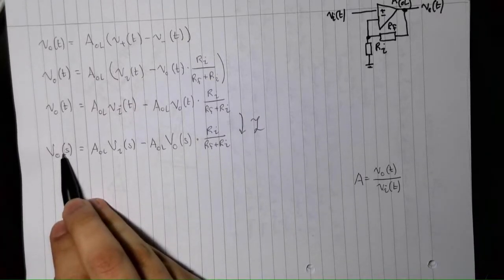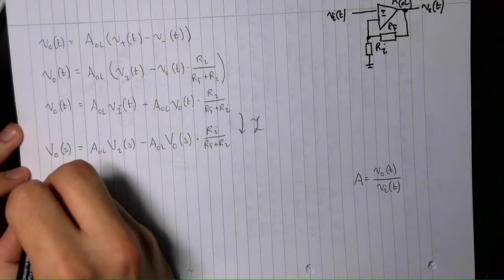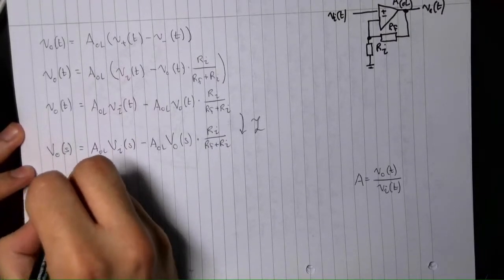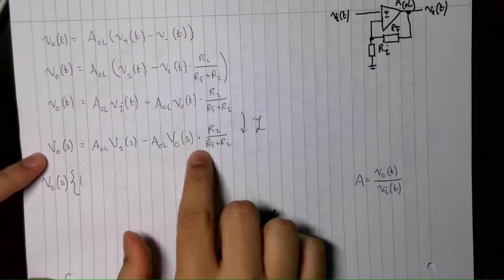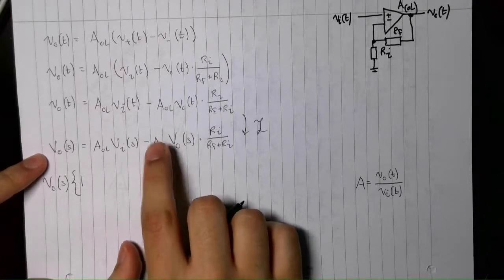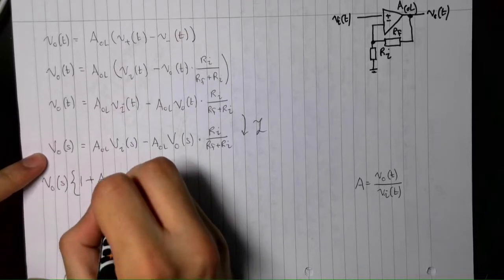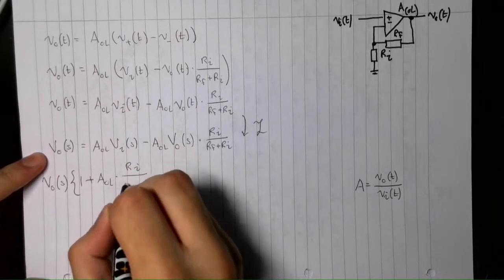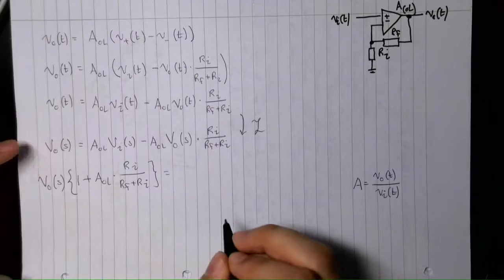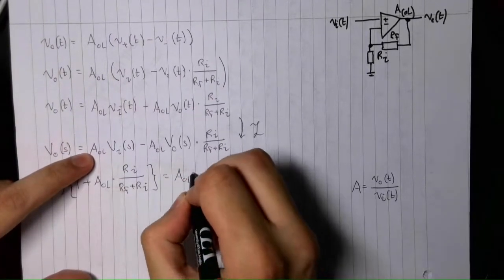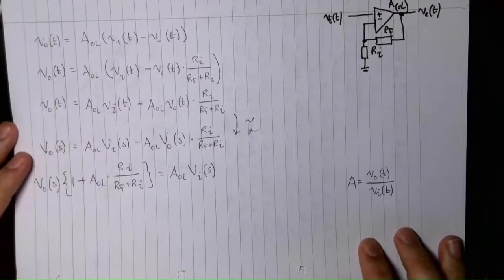Now, let's take this term over to the other side to isolate the output voltage. So, I'm going to actually factor this out immediately. So, we have one here, and when we take this term across, we're going to have a positive open loop gain multiplied by this, positive open loop gain multiplied by our resistor divider equation. And that is going to equal the open loop gain multiplied by the voltage at the input.